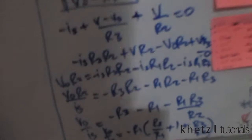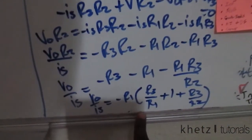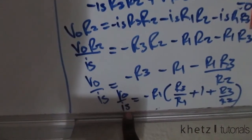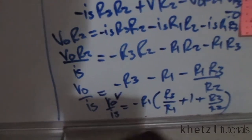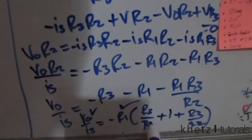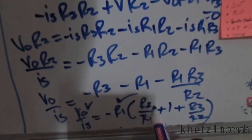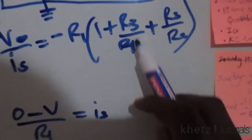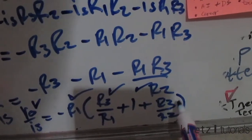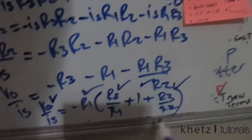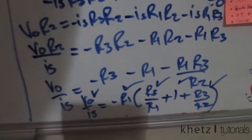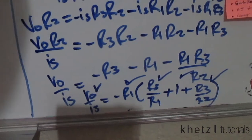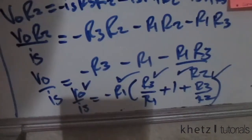Rearranging, we confirm each term matches the required form: vo divided by is — check; negative R1 factor — check; R3 divided by R1 — check; the constant one — check; and R3 divided by R2 — check. Rearranging everything in the brackets makes it look exactly the same as given in the question, so we are done.